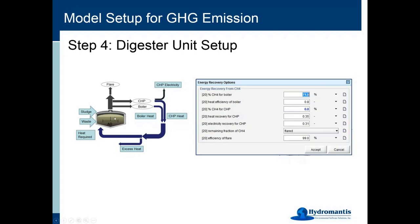Every chemical dosing unit has a chemical being consumed and an associated GHG factor; default values are provided but can always be modified. We also take into account hauling of chemicals — fuel consumption for hauling is included in greenhouse gas estimates. Step four is setting up the anaerobic digester: methane produced can go to a flare, to CHP for heat and power recovery, or to a boiler. We can specify how much gas goes to the boiler and how much to the CHP, or whether it is flared or released, and the model estimates the resulting offsets.